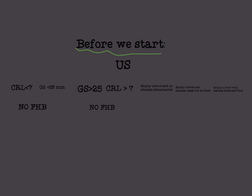Before we start talking about miscarriage, I want to discuss some ultrasound features of pregnancy, starting with what we call crown-rump length. If we have a crown-rump length less than 7 millimeters and a gestational sac less than 25 millimeters — by the way, gestational sac increases 1.3 millimeters each day — with no fetal heartbeat, what do we call that?